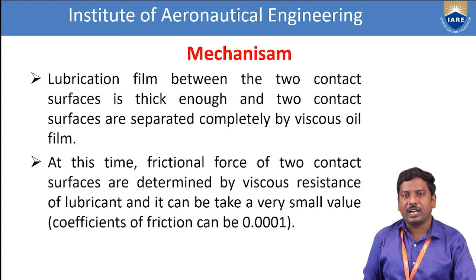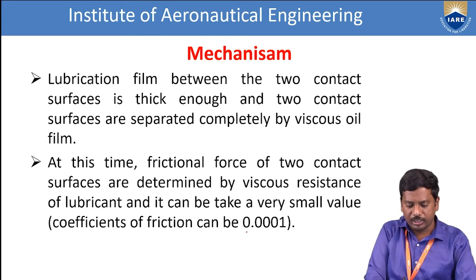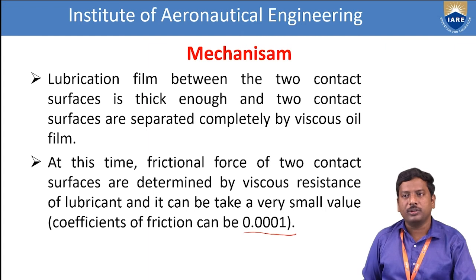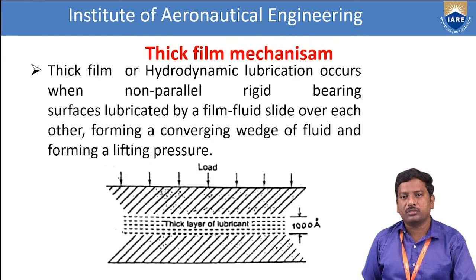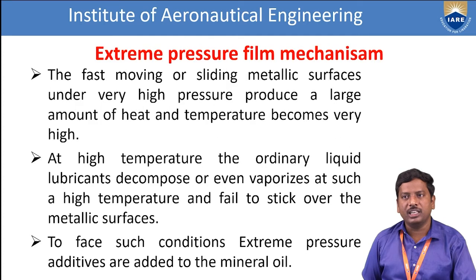Now we see the mechanisms involving lubricants. The lubrication film between the two contact surfaces is thick enough, and the two contact surfaces are separated completely by a viscous oil film. The frictional force of the two contact surfaces is determined by the viscous resistance of the lubricant, and it can take a very small value — the coefficient of friction can be as low as 0.001. There are mainly three types of mechanisms: thick film, thin film, and extreme film.